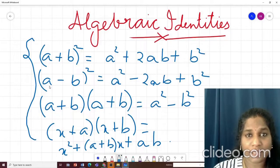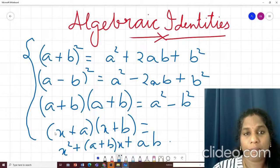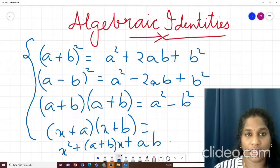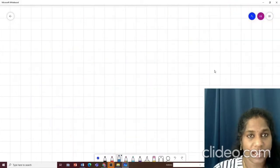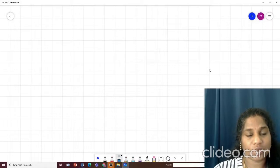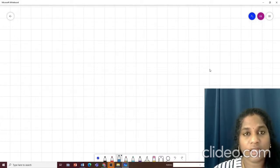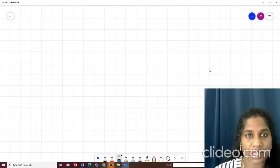a plus b whole square, a minus b whole square, a plus b into a minus b and x plus a into x plus b. By chance while working out you forgot any one of the identity, you should know how to derive it. It's a must that we always should know how to derive any particular formula. So here I will give you an example. I will tell you how to retrieve the last formula. You can apply the same concept for all the 4 but just in case you forget, you should remember them.